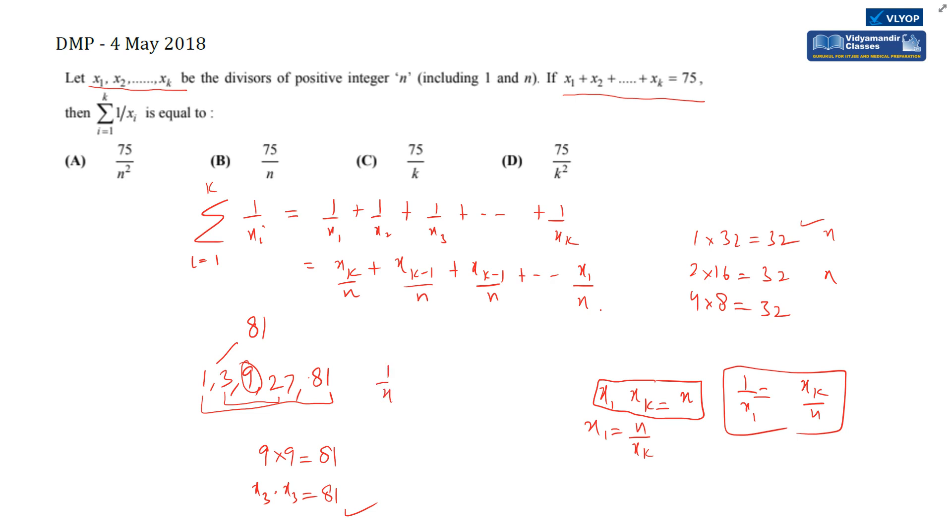So we have 1/x1 + 1/x2 + 1/x3 + ... becomes xk/n + xk-1/n + ... + x1/n.